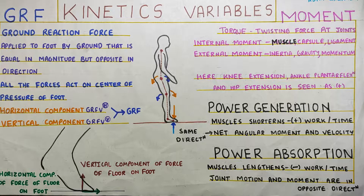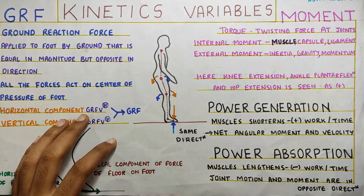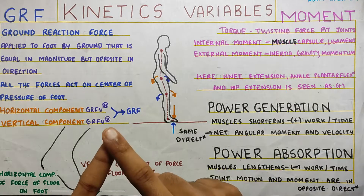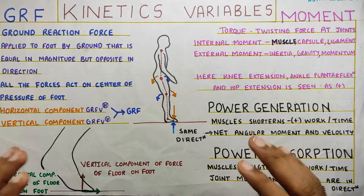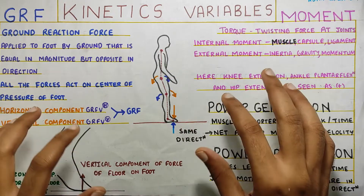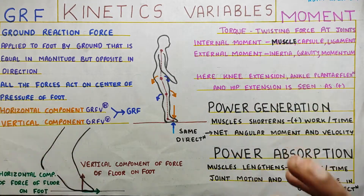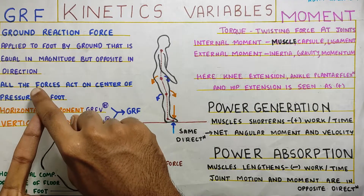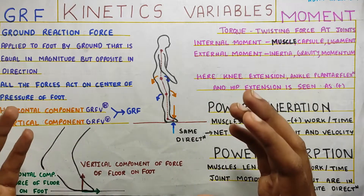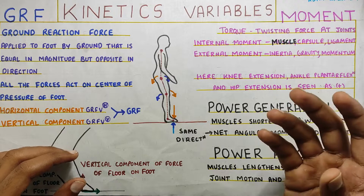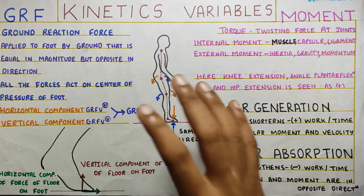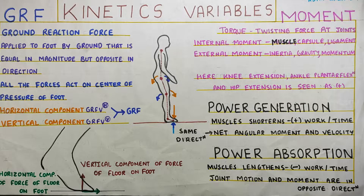In this video, we are going to talk about the kinetics variables. The last video, if you remember, we spoke about the kinematics variables where it was all about the angles and the distance that is covered — so it was all about the movement. Kinetics will be all about the forces involved in your gait cycle: parameters like ground reaction force, moment, power generated and power absorbed. These parameters vary in your gait cycle and will vary from person to person too.